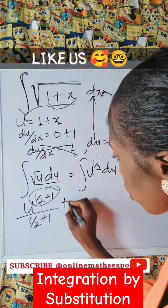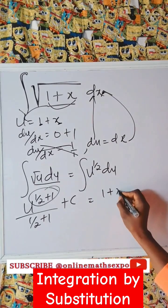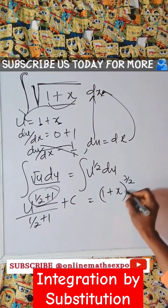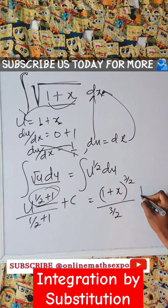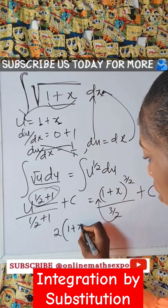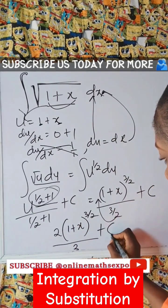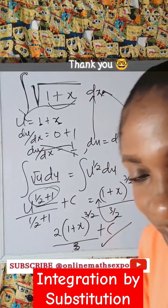Remember your u is 1 plus x, so we're going to have 1 plus x. Into, add this, you have three over two all over three over two plus c. Simplify. We have two times 1 plus x to the three over two all over three plus c as an answer. Please subscribe.